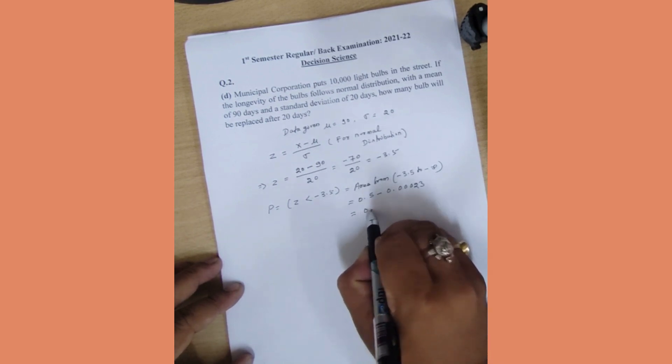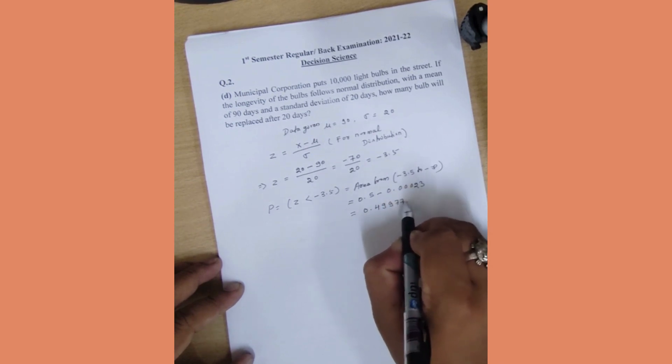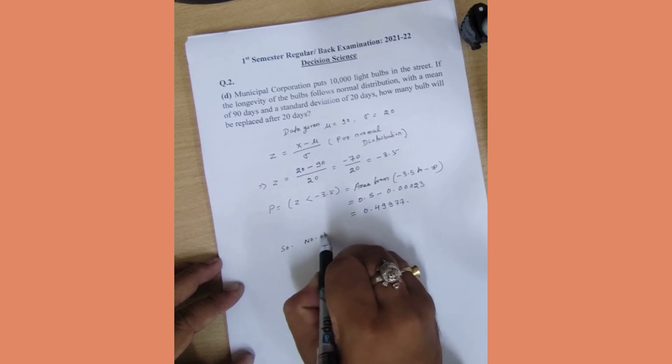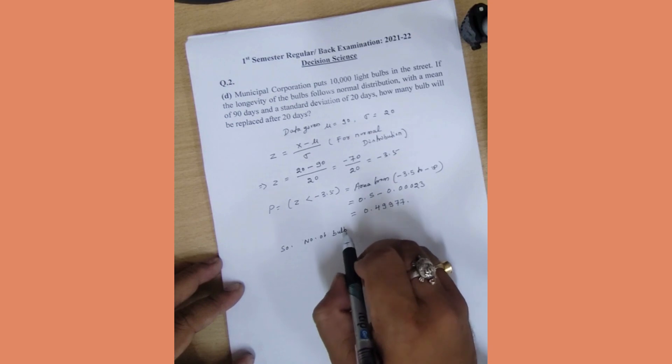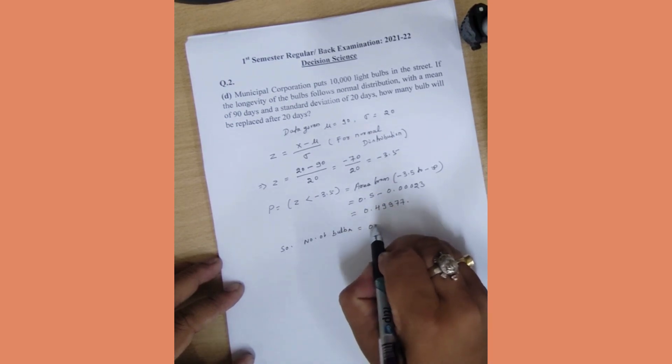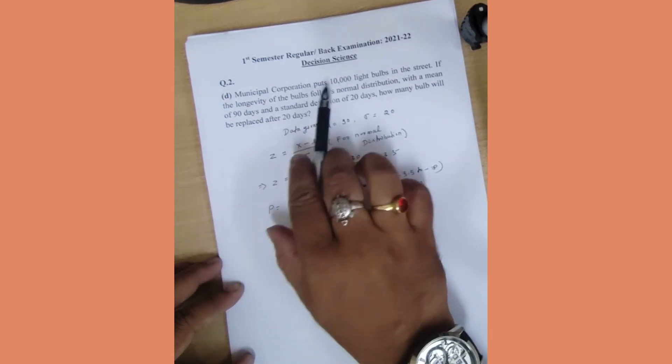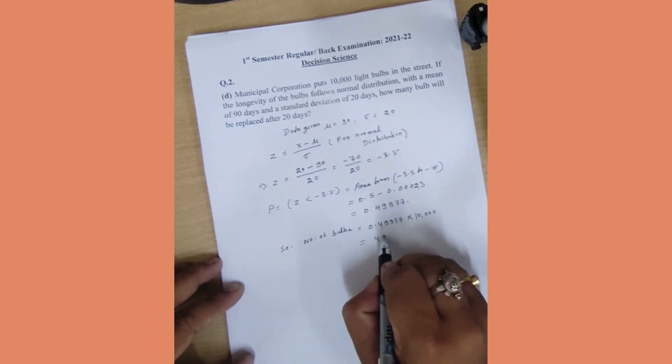So the number of bulbs to be replaced after 20 days equals 0.49977 times 10,000, so that equals 4997.